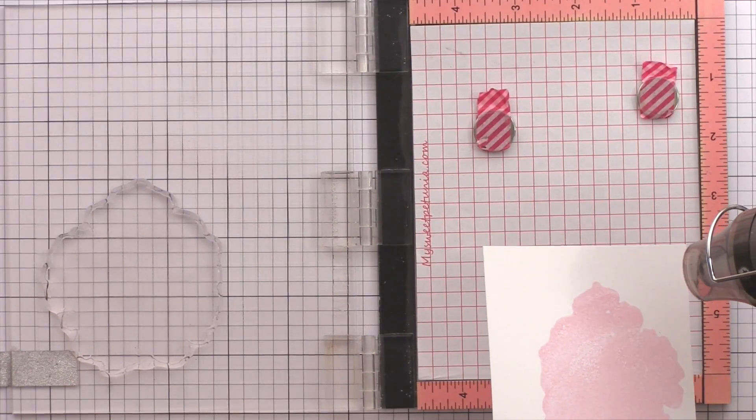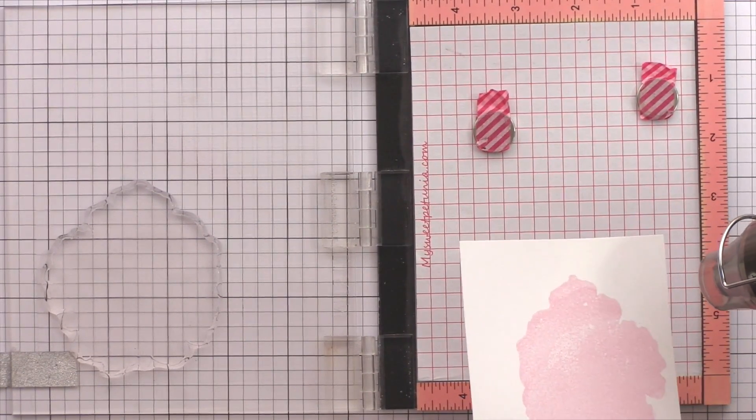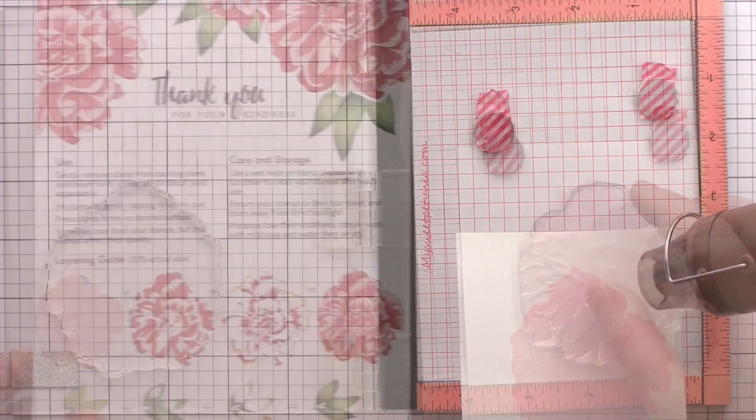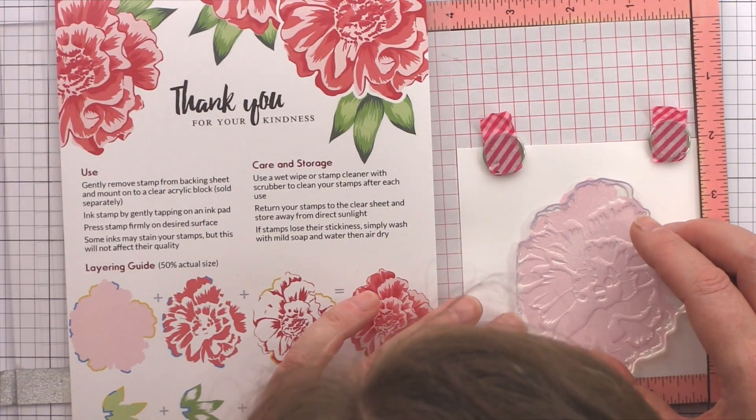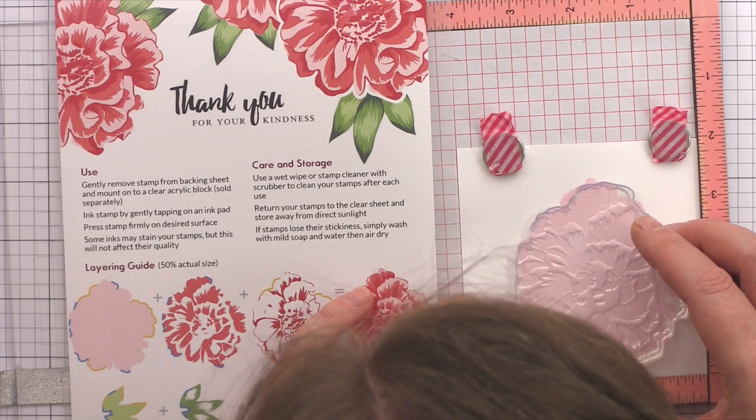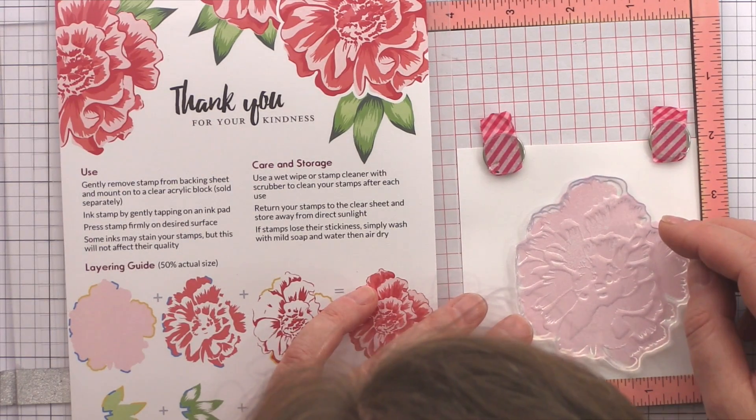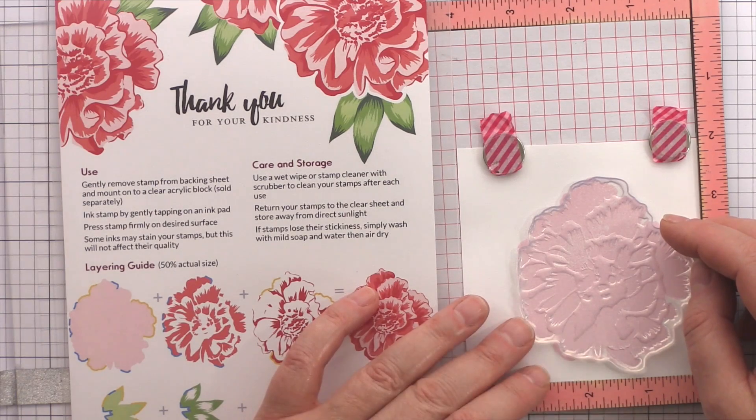Before stamping the next layer I like to make sure the first layer is good and dry as I think this gives a crisper impression if each layer is dry before stamping the next. Altenew make it very easy to align the layers in their stamp layering sets as on the back of the packaging they have a guide showing which areas of the two layers to watch out for when aligning them.